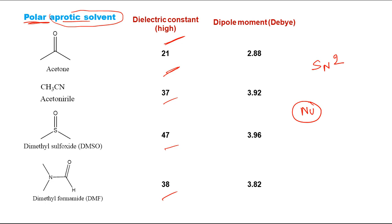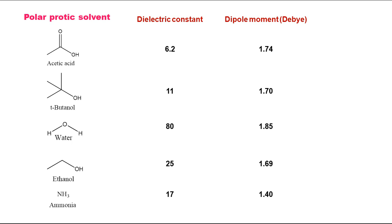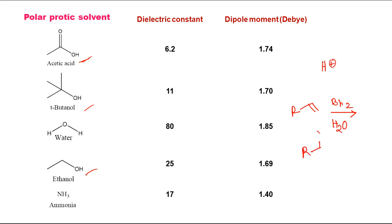For polar protic solvents, we mostly see water and different types of alcohols — tertiary butanol, ethanol, methanol — as well as acetic acid and ammonia. These solvents, as mentioned earlier, are required when the solvent must play a role beyond just a medium — they can be a source of H⁺ or help in the removal of H⁺. For example, when an alkene reacts with bromine in water as solvent, which is polar protic.